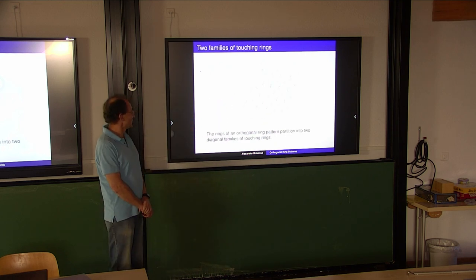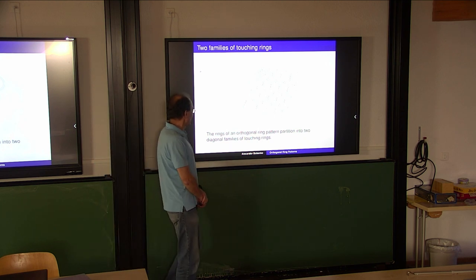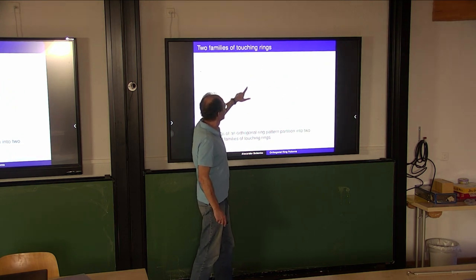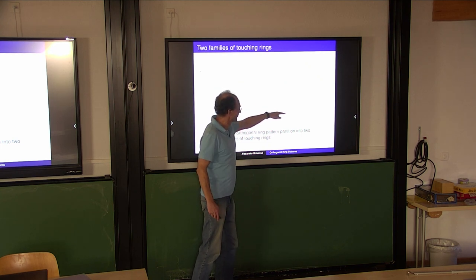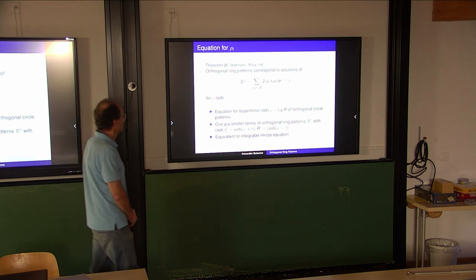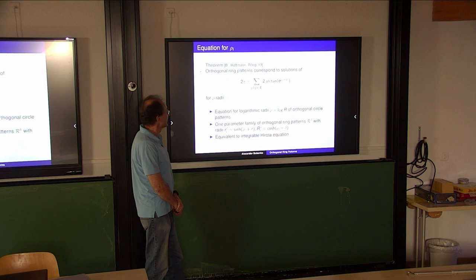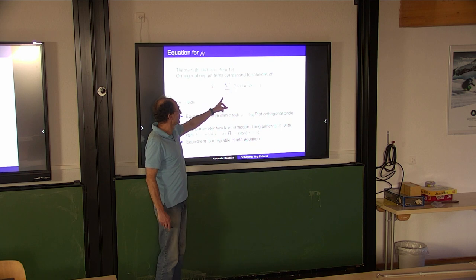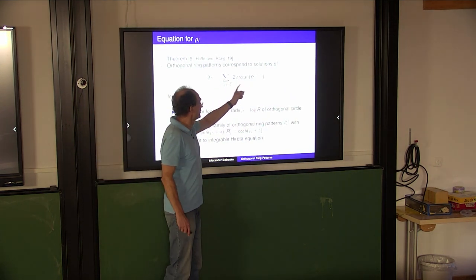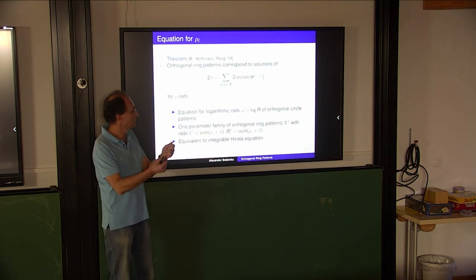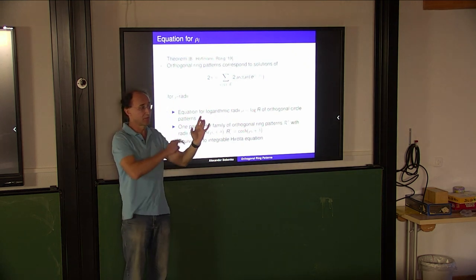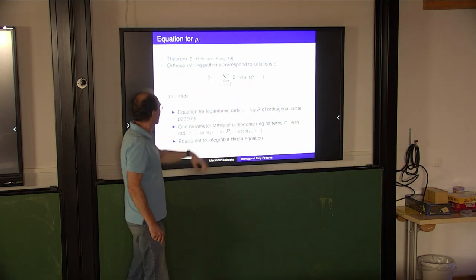Now you see a picture of what it looks like. The rings of an orthogonal ring pattern partition into two diagonal families of touching rings. You see blue rings touching in one direction and red circles touching in the other direction. Now let's look at the equations. It's not difficult to derive the equation for the radii rho. Orthogonal ring patterns correspond to solutions of this equation: you go around the circle and sum up all the corresponding angles. Rho_i and rho_j are circles of two neighboring rings, and you sum over edges adjacent to the vertex. The angle should be 2pi.